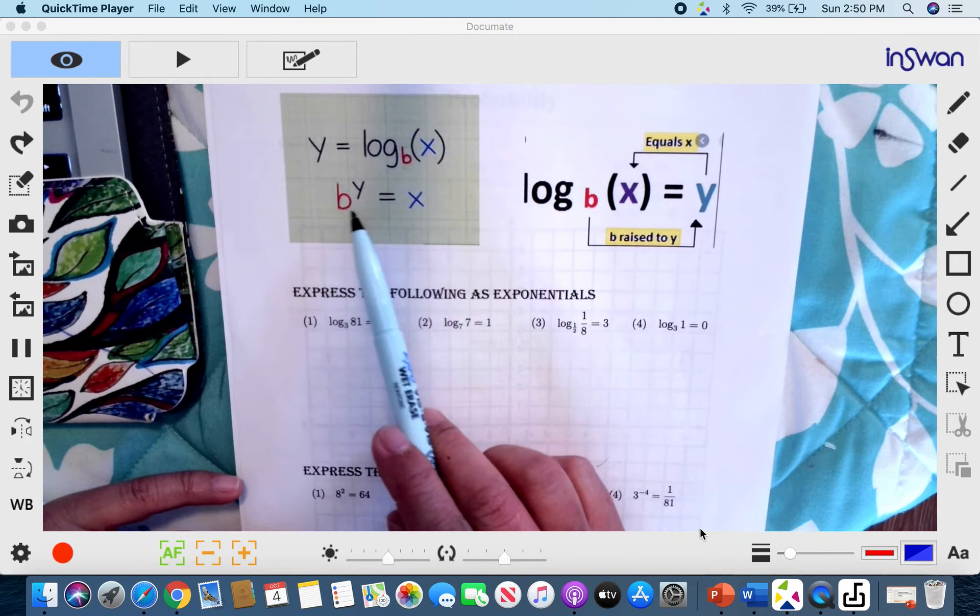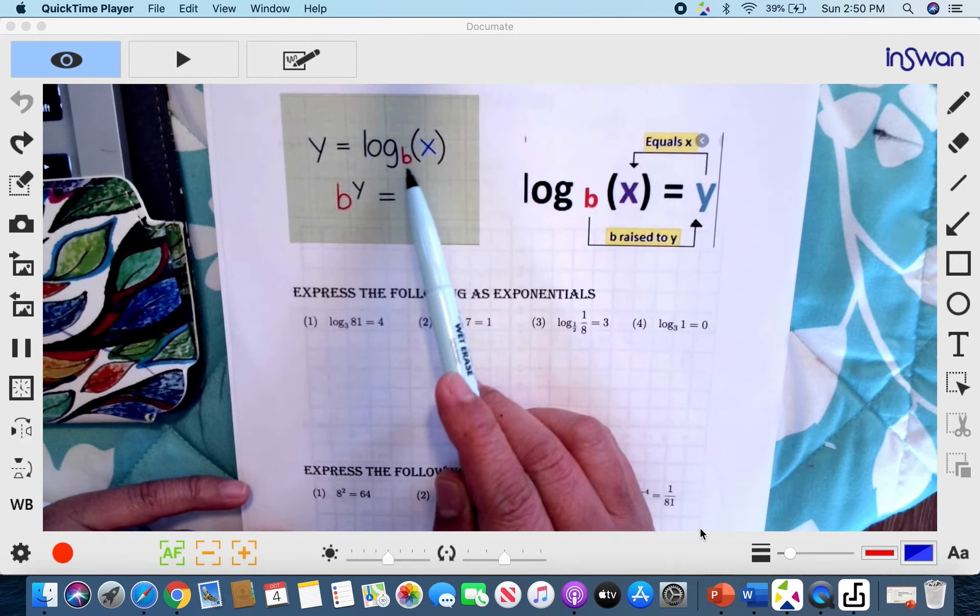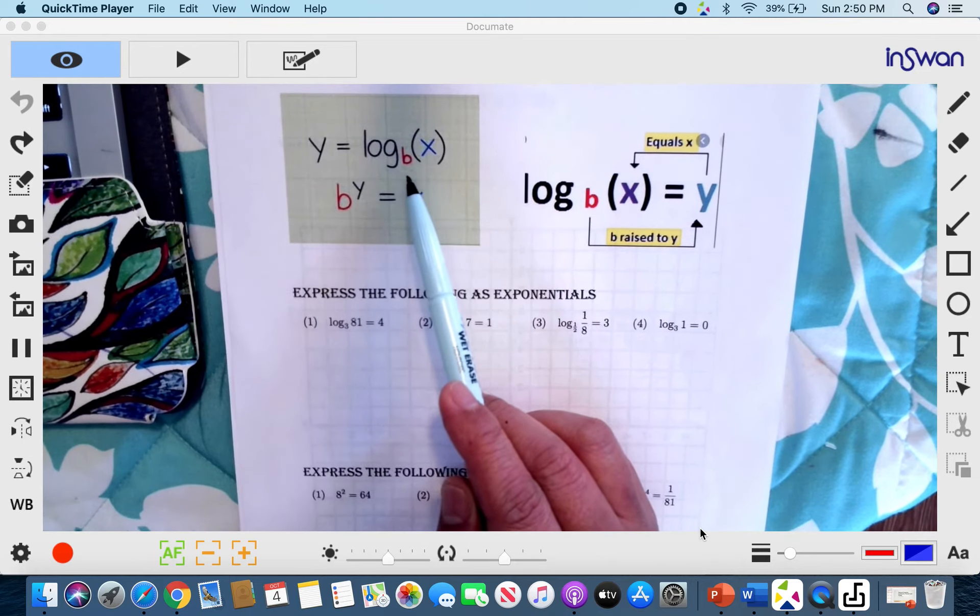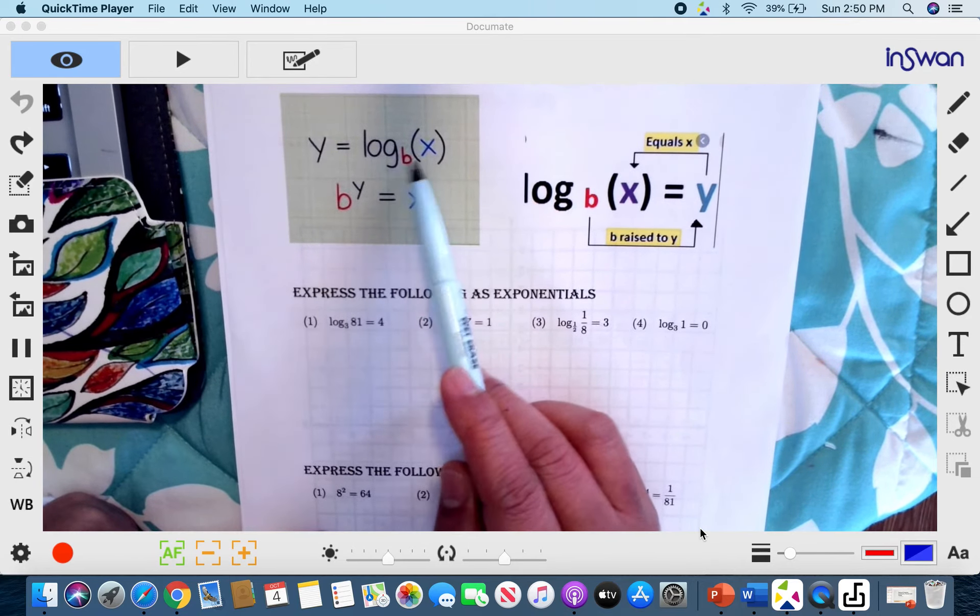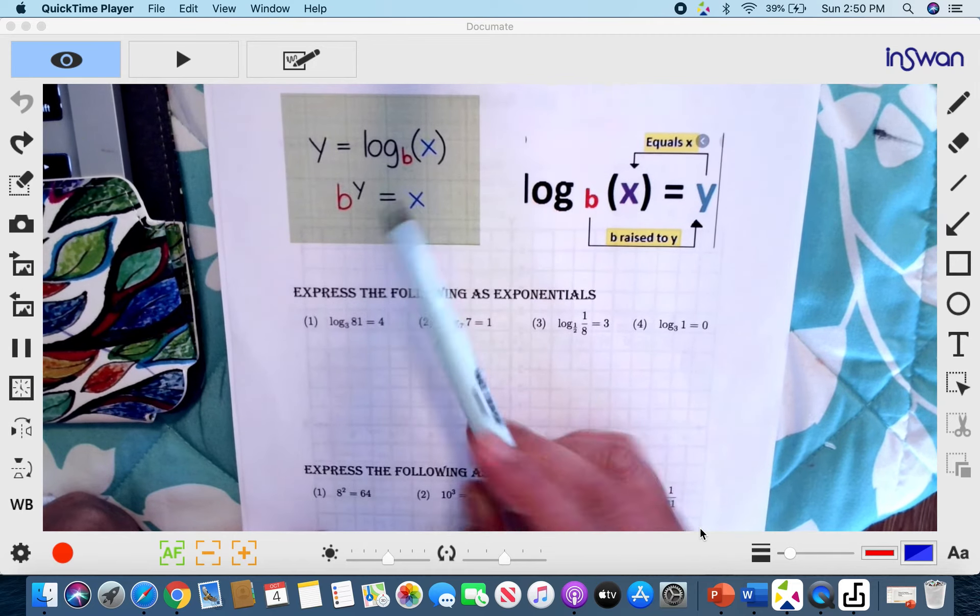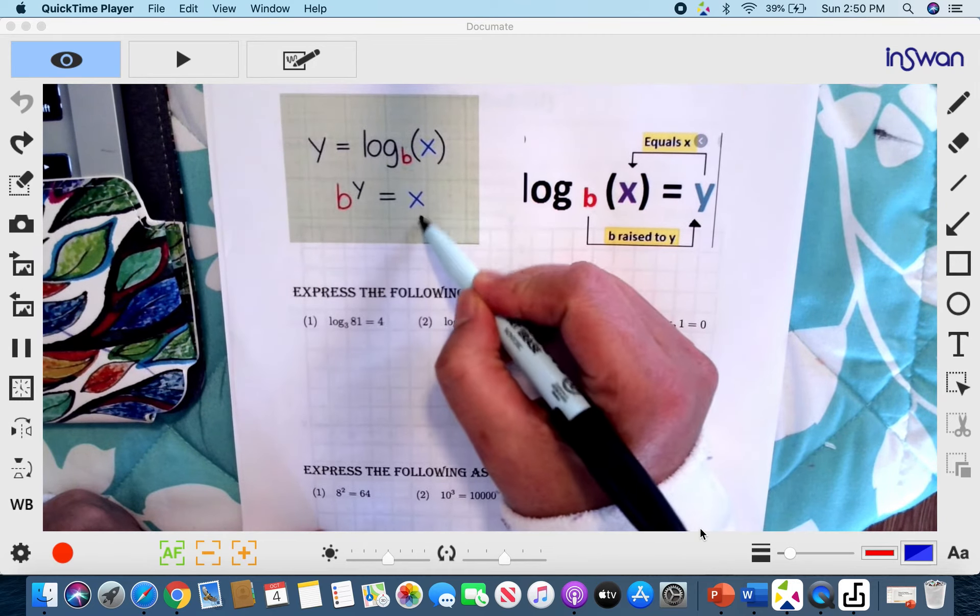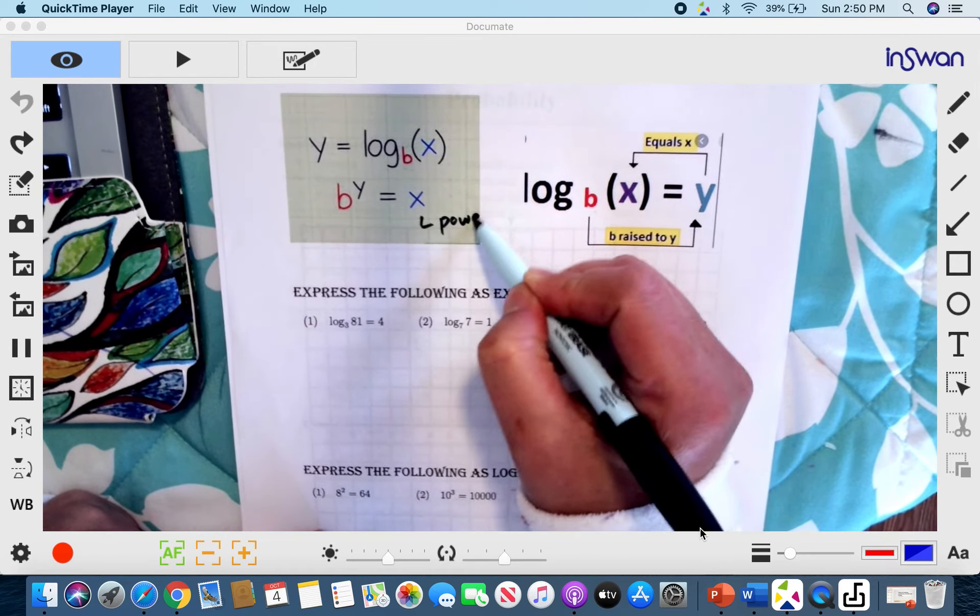So you see your base is b. Anyway, it's written under, so it must be the base. So the base is b, the exponent is y, and the power is x. So we say that this is our power.